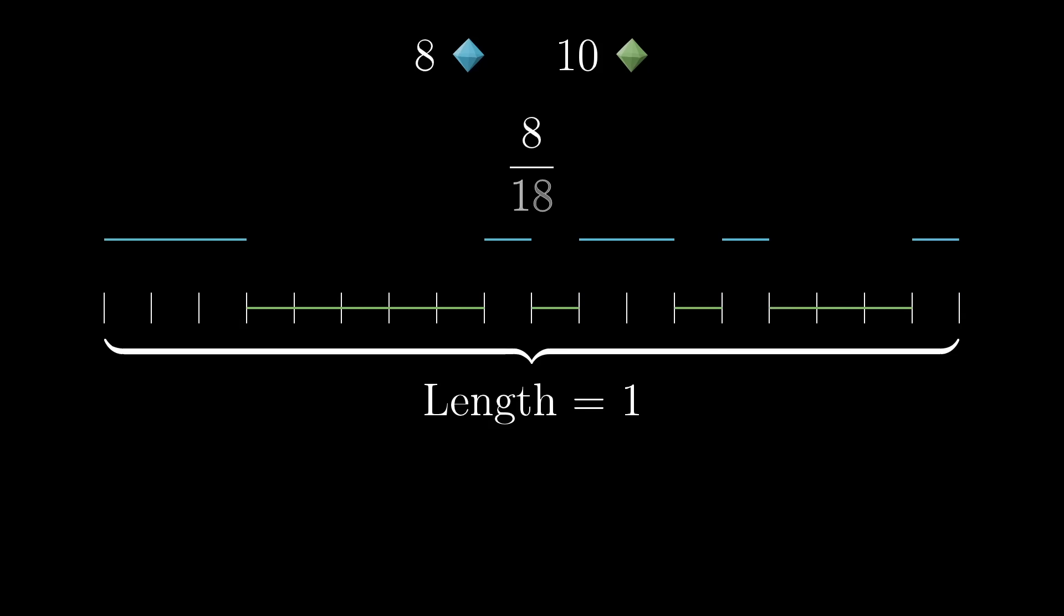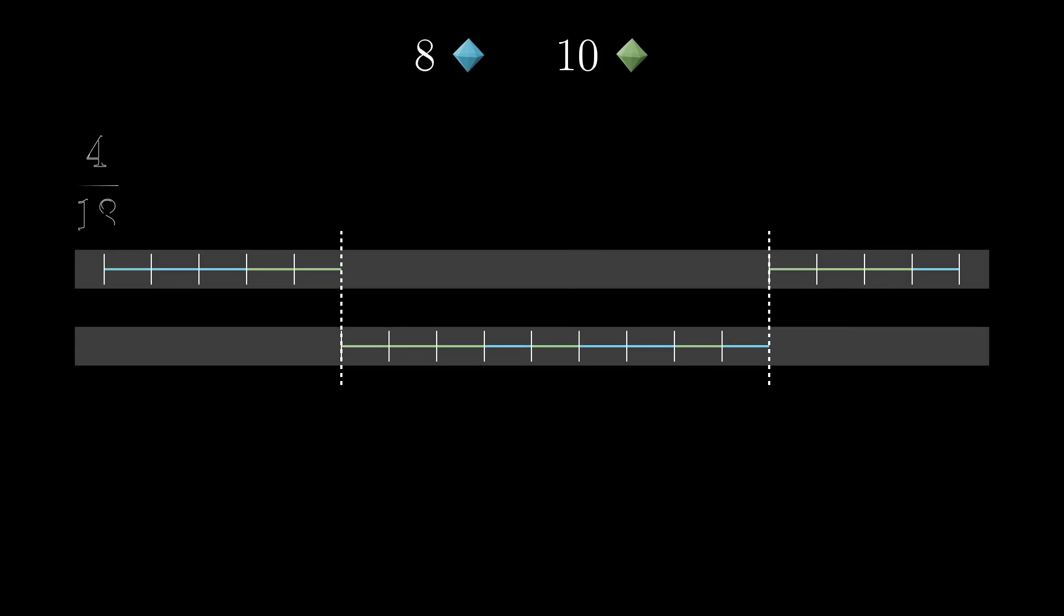So in this case, eight eighteenths of the line would be painted sapphire, and ten eighteenths would be painted emerald. The continuous variant of the puzzle is now to ask if we can find two cuts anywhere on this line, not necessarily on the one eighteenth interval marks, that lets us divide up the pieces so that each thief has an equal length of each color. In this case, each thief should have a total of four eighteenths of sapphire colored segments, and five eighteenths of emerald colored segments.